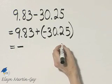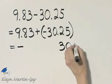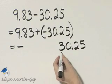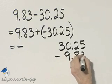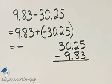But we need to go off to the side and simply subtract absolute values. So I'm writing down 30.25 and I'm subtracting 9.83. And let's see what we have.